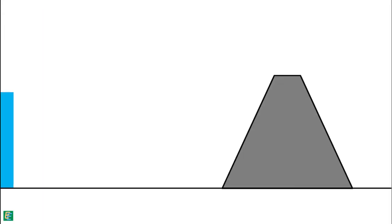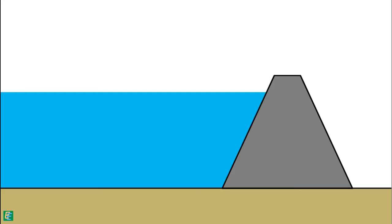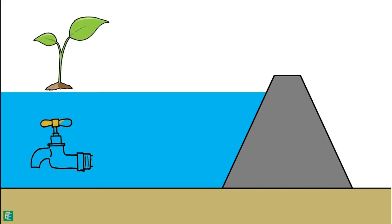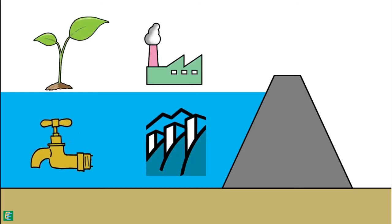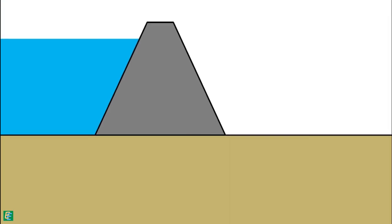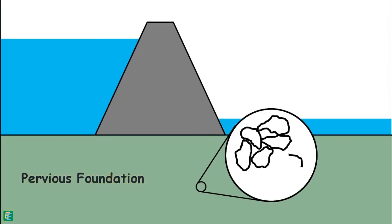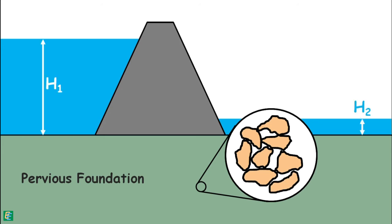A dam is a barrier that restricts the flow of water and can be used to collect it. This water may be utilized for many purposes such as irrigation, human consumption, industrial use, and hydropower generation. Many times these dams and such hydraulic structures are built on pervious foundations, and water flows through the voids present in the soil from high hydraulic head to low hydraulic head.